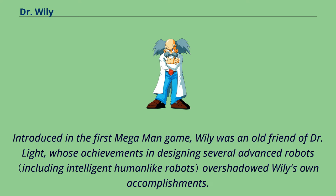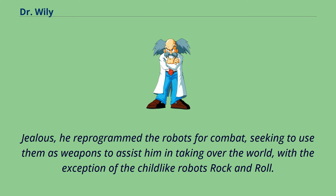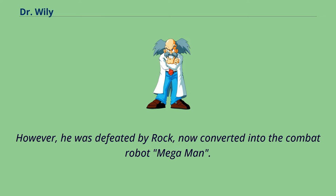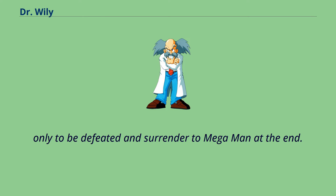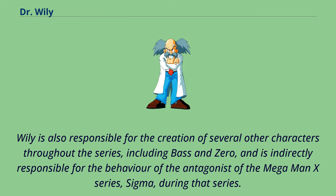Introduced in the first Mega Man game, Wily was an old friend of Dr. Light, whose achievements in designing several advanced robots overshadowed Wily's own accomplishments. Jealous, he reprogrammed the robots for combat, seeking to use them as weapons to assist him in taking over the world, with the exception of the childlike robots Rock and Roll. However, he was defeated by Rock, now converted into the combat robot Mega Man. Wily returned as the antagonist of subsequent titles in the main series with a different scheme each time, sometimes framing someone else for his crimes, only to be defeated and surrender to Mega Man at the end. Wily is also responsible for the creation of several other characters throughout the series, including Bass/Zero, and is indirectly responsible for the behavior of the antagonist of the Mega Man X series, Sigma.